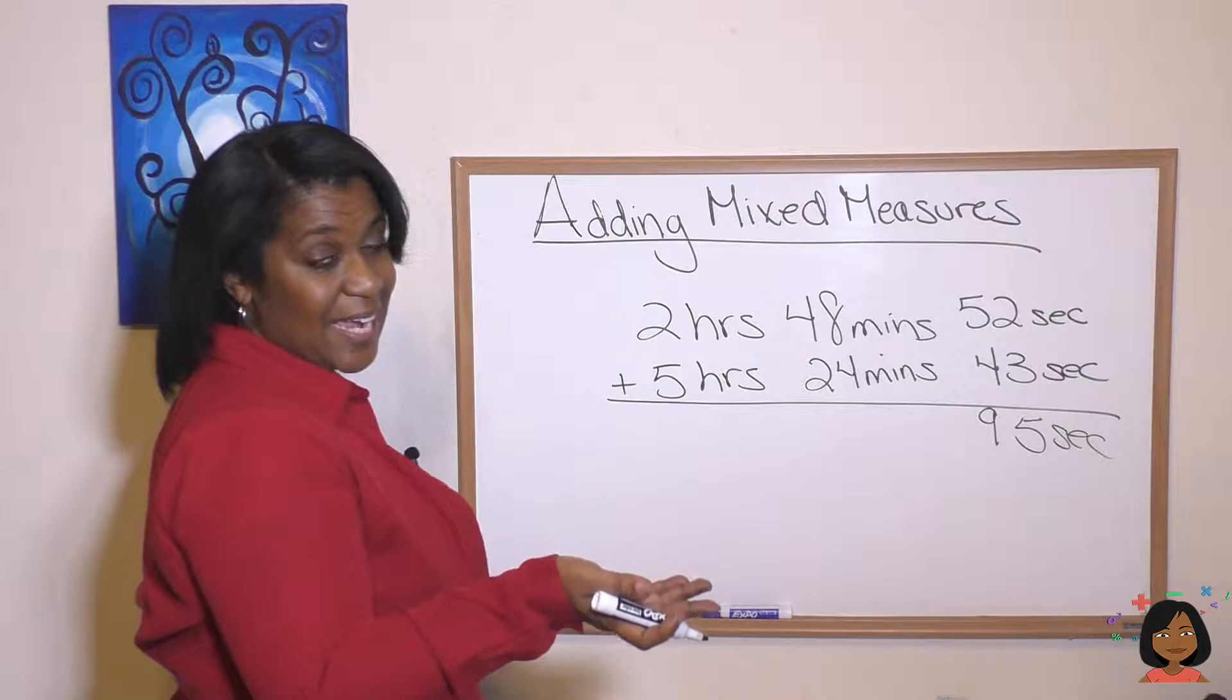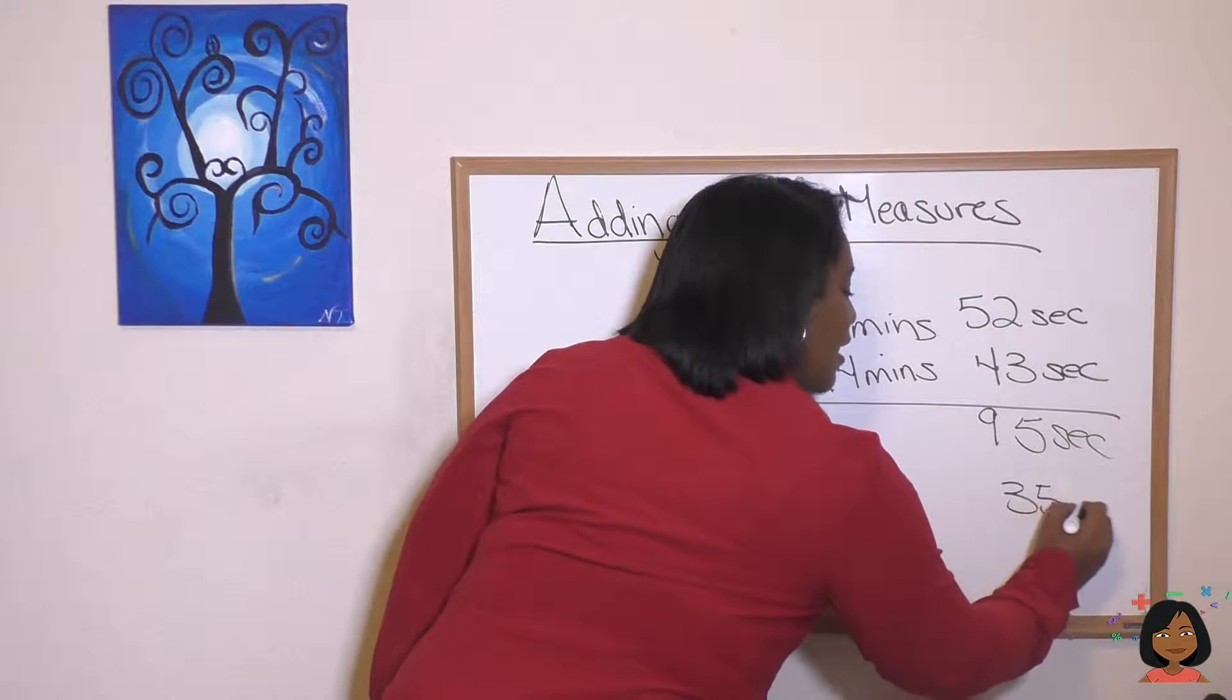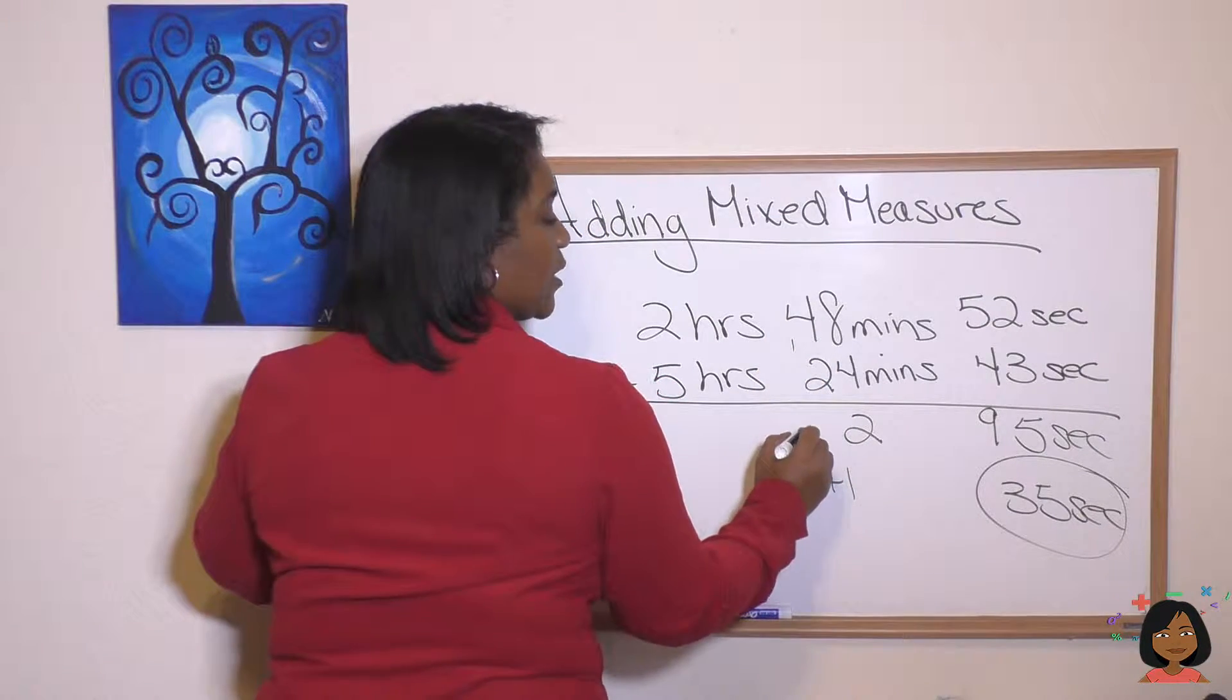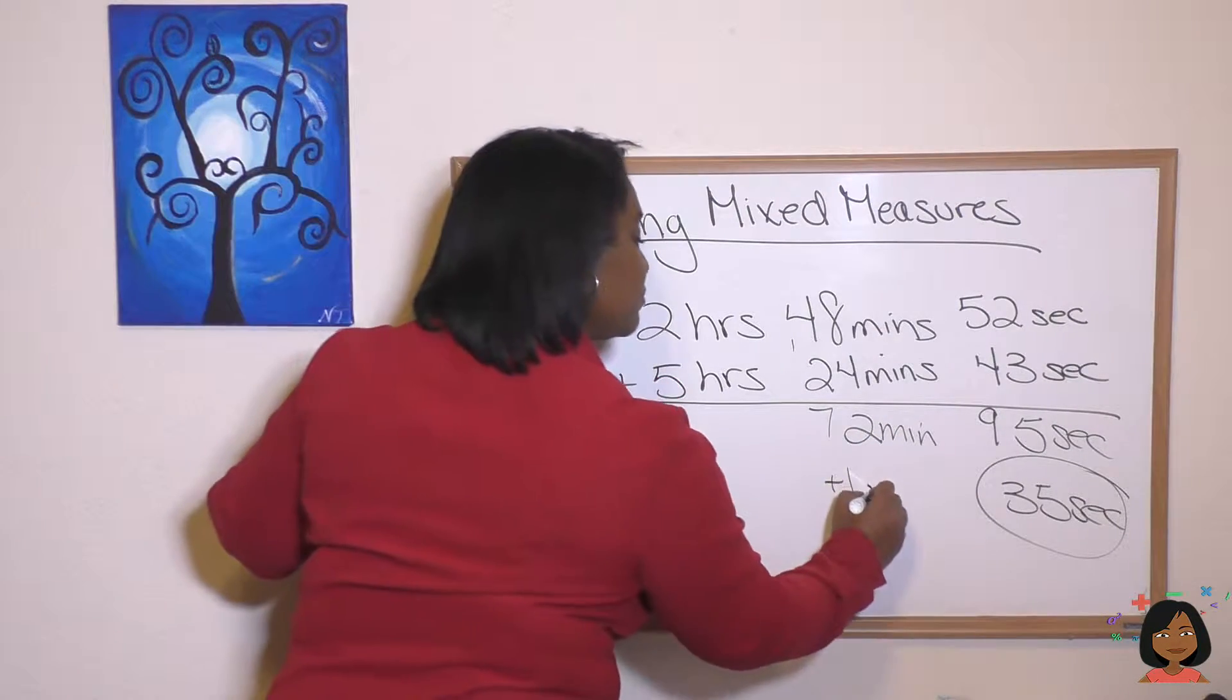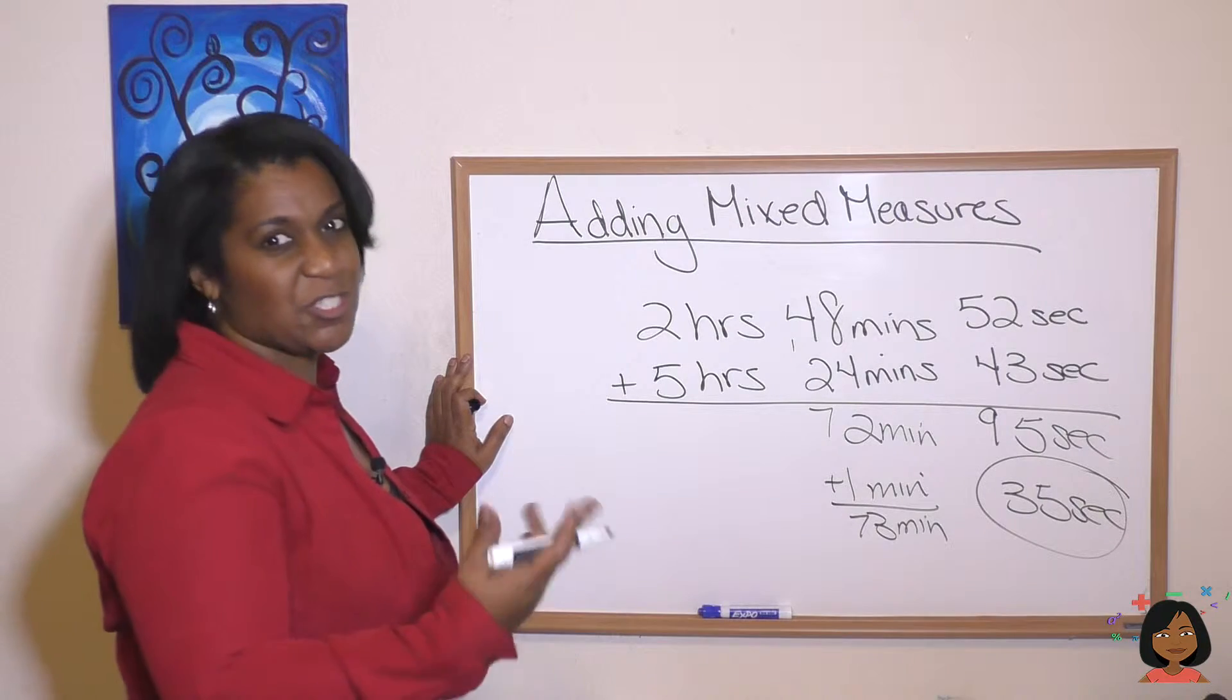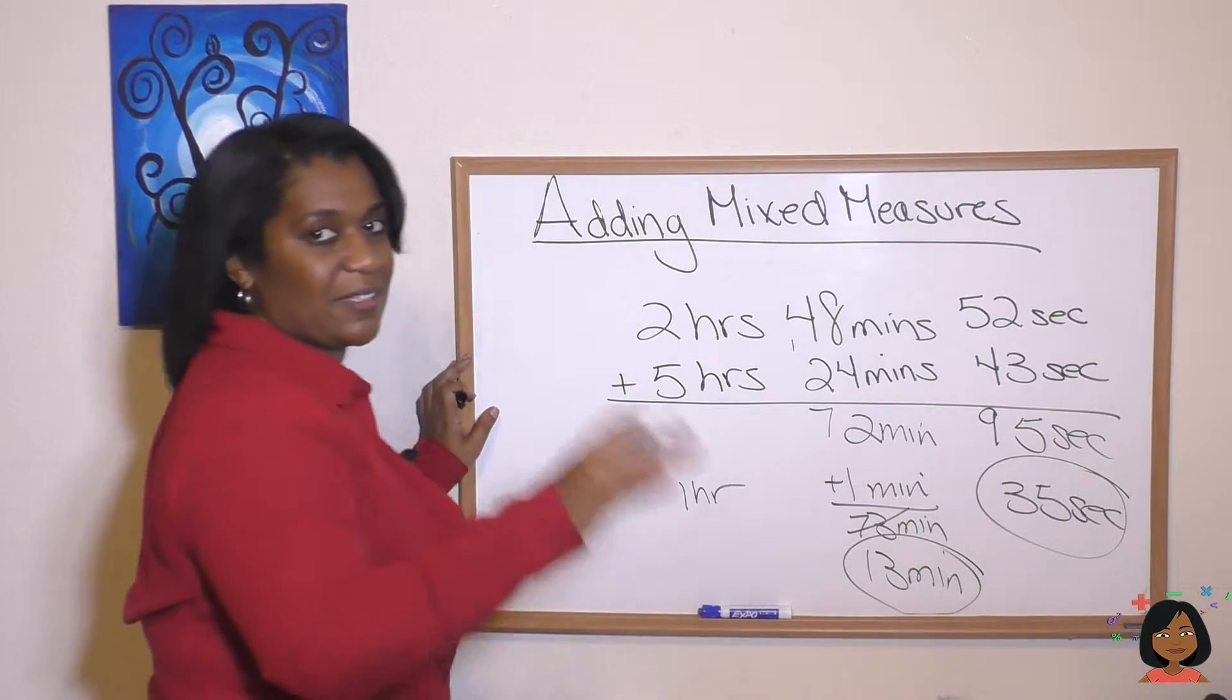We know there's 60 seconds in one minute. So we can know that one minute is going to come over here and we're going to have 35 seconds left over. I'm going to circle it because I know I'm done with that one. Let's handle our minutes now. Eight and four is 12. Four and two is six and one is 72 minutes. But I've got the one that came from over there, which gives me 73 minutes. But wait a second. We know that 60 minutes is an hour. So let's do a conversion there. So we're going to cross this out, bring one hour over here and leave. We're left with 13 minutes. And I'm going to circle that because I know I'm done.